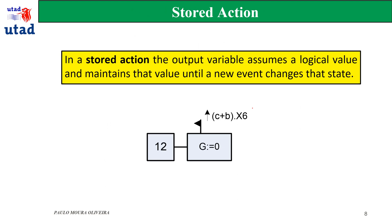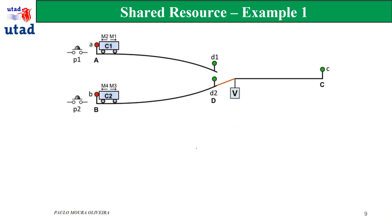The stored action: the output variable is going to assume a logical value and maintain that logical value until a new event changes that state. For instance, if step 12 is active, we execute this function which has an associated event depending on the rising edge of this variable. When the step is active and this rising edge event occurs, the variable K is going to assume the value of zero. This is a stored action and it will hold this value until a new order changes it.